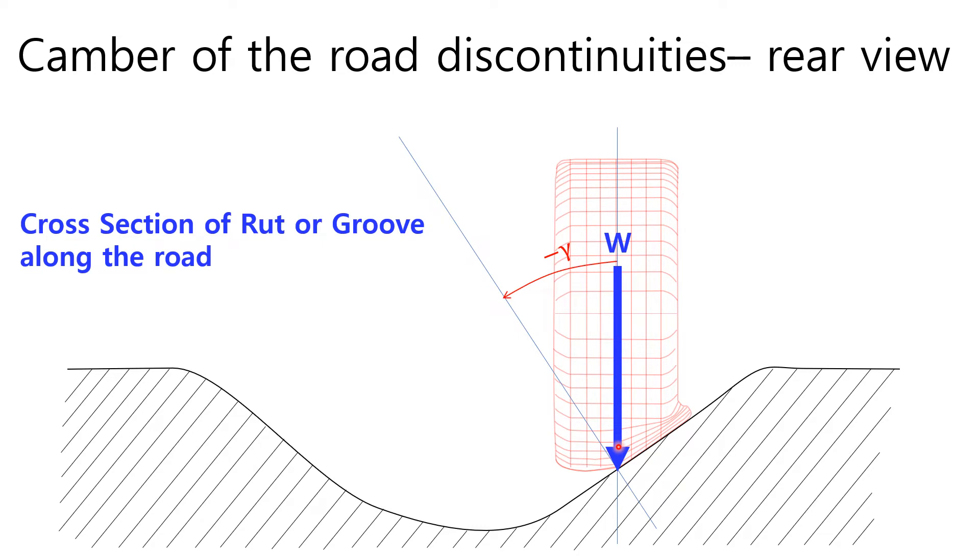In the case described in this picture, the vehicle wheel has a negative camber angle gamma.